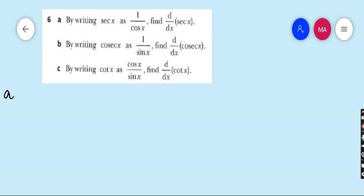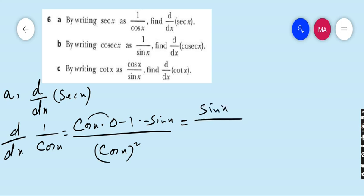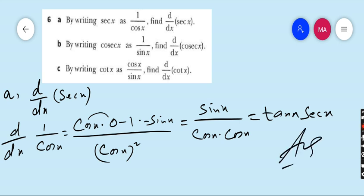Question number 6, part A: by writing sec x as 1/cos x, find d/dx of sec x. Very easy. d/dx: write sec x as 1/cos x and apply the u/v quotient rule formula. v-squared, v as it is, derivative of 1 is 0, minus 1 times derivative of cos x which is −sin x. This gives sin x / cos²x, which is (1/cosx)·(sinx/cosx) = sec x · tan x. So the final answer is sec x · tan x.